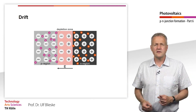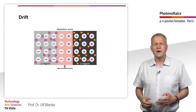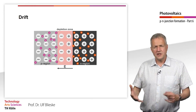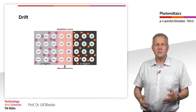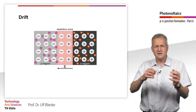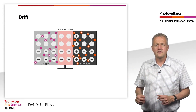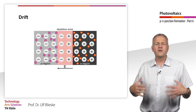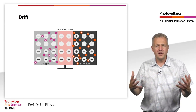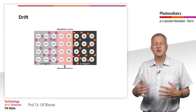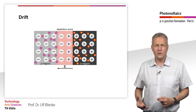As a consequence, majority charge carriers are depleted in the space charge region, so this region is called the depletion region or depletion zone.